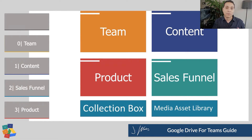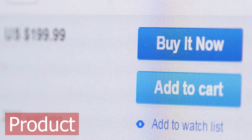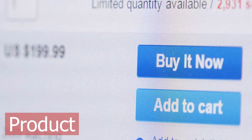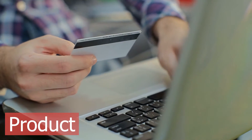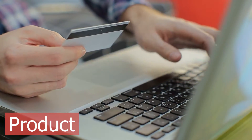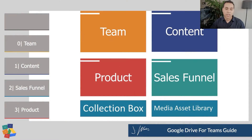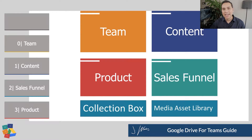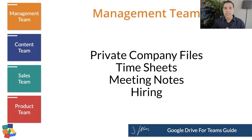And then finally we have Product. If you're servicing clients, you might have an individual folder for each client, or if you have digital products or projects that will eventually become a product, they go into the product quadrant. And at the bottom we have the very important Collection Box and Media Library. We'll start with the management side of things.